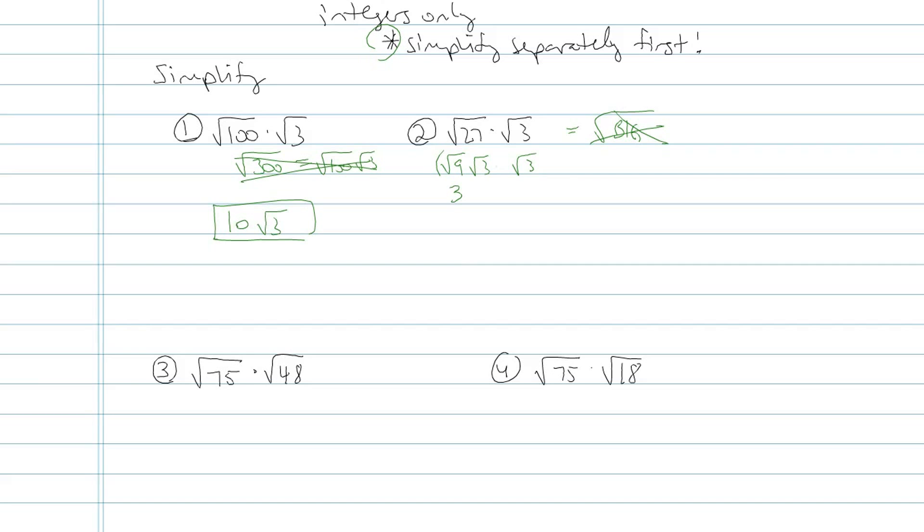Now square root of 9 here, that's regular old 3, and then root 3 times root 3, that's just regular 3 as well. So my final result there is 9. Let's try another one.